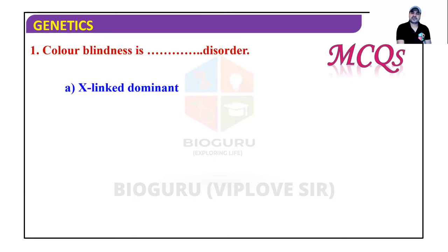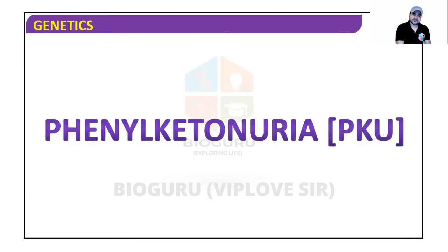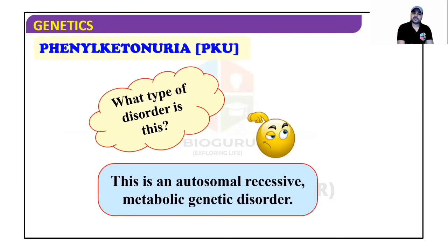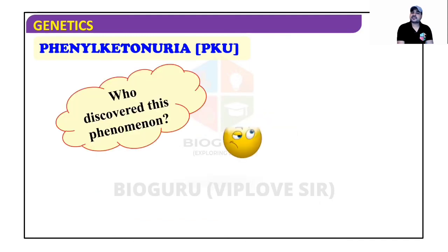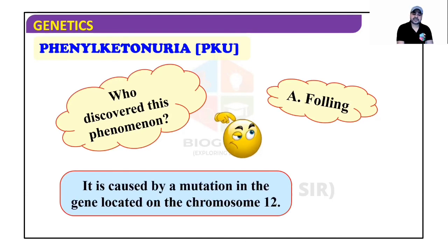Color blindness is an X-linked recessive disorder. Next Mendelian disorder is phenylketonuria (PKU), which is an autosomal recessive metabolic genetic disorder. It is caused by a mutation in the gene located on chromosome number 12.